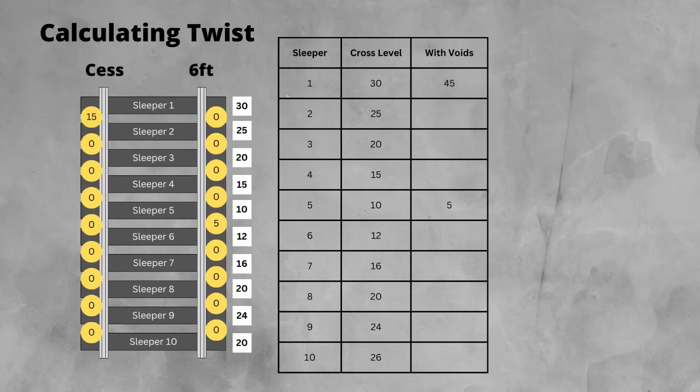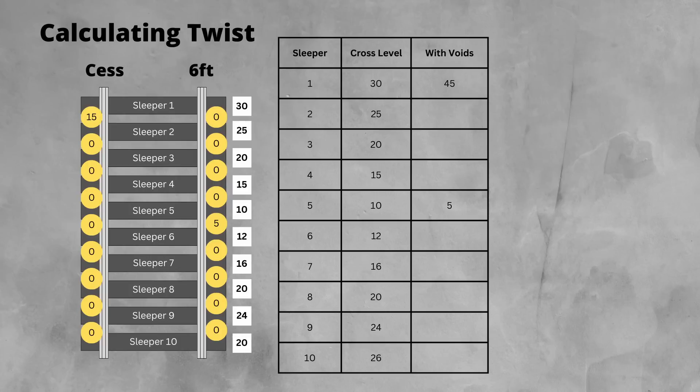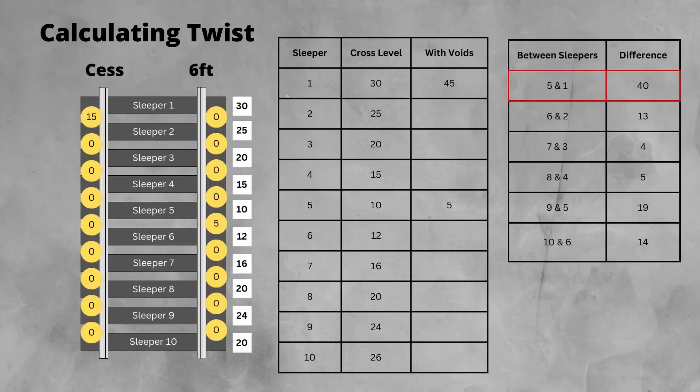Let's put these values into the table of difference, and work out the twist across sleepers 1 and 5. So then we do the 45, take 5, which gives us a twist of 40mm. This in turn gives us a twist value of 1 in 75.